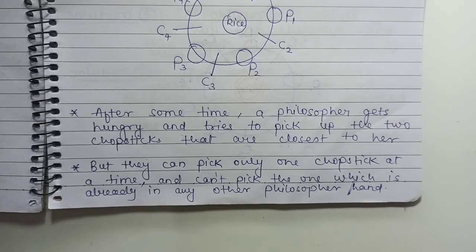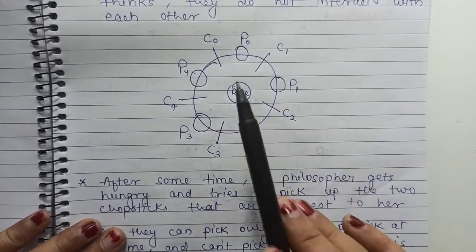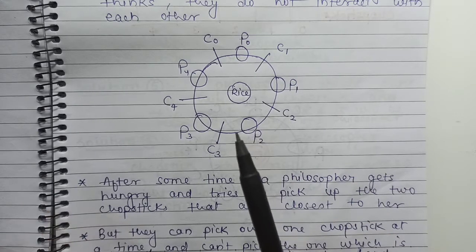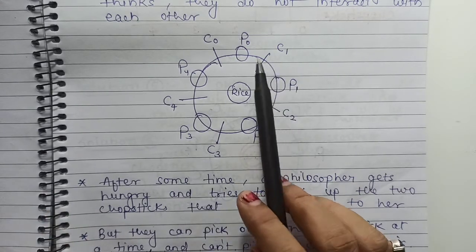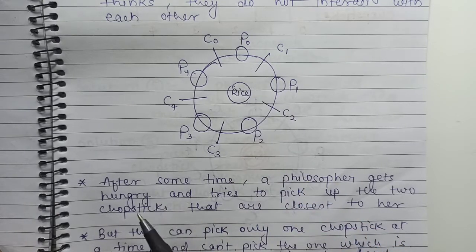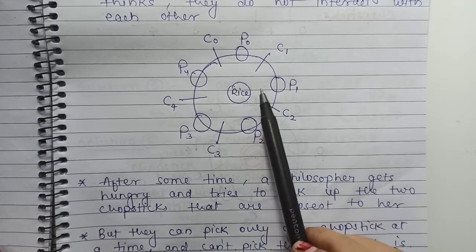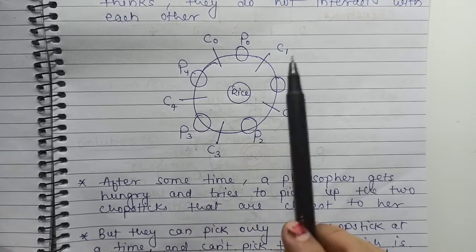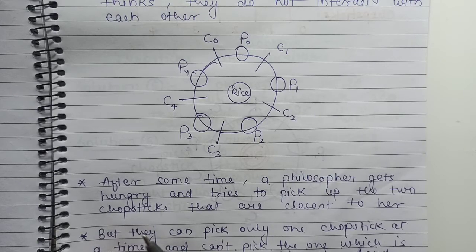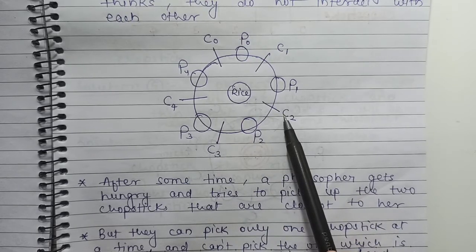The chopsticks are between her and her left and right neighbors. But a philosopher may pick up only one chopstick at a time. Obviously, they cannot pick a chopstick that is already in the hand of a neighbor. When a hungry philosopher has both of her chopsticks at the same time, they eat without releasing their chopsticks. When they finish eating, they put down both of their chopsticks and start thinking again. This is the problem.